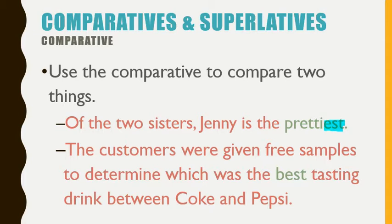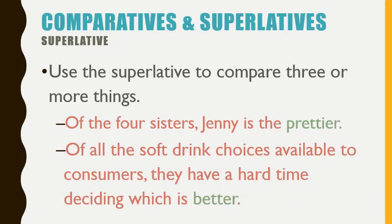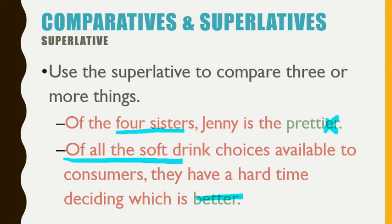The next sentence: 'The customers were given free samples to determine which was the best tasting drink between Coke and Pepsi.' You need to remind yourself we're talking about two things, so it is not the best — we want to find the better one of the two. And we should use the superlative to compare three or more things: 'Of the four sisters, Jenny is the prettier' would be incorrect — we need to say prettiest. Finally, 'Of all the soft drink choices available to consumers, they had a hard time deciding which is better' — if we have all soft drink choices, we could be talking about hundreds, so it is not better, we need to say which is best.